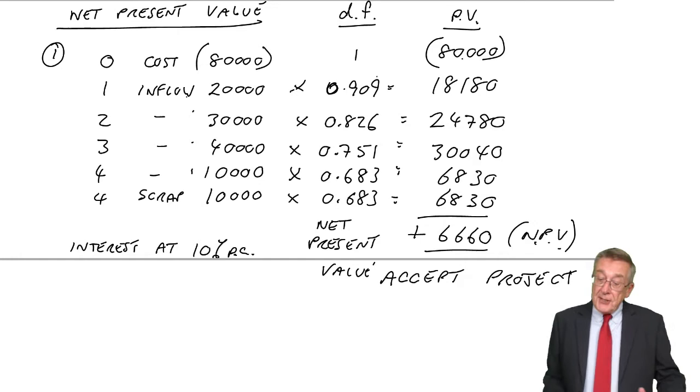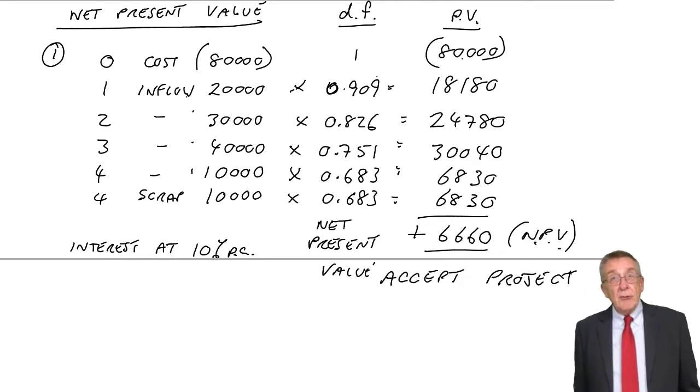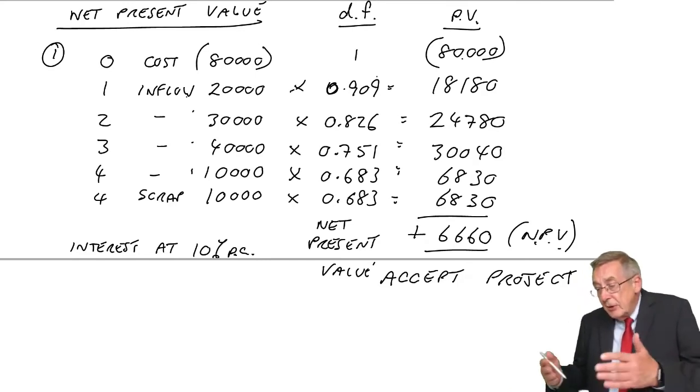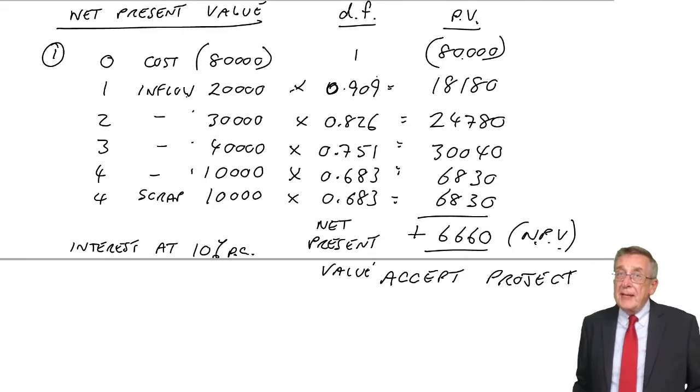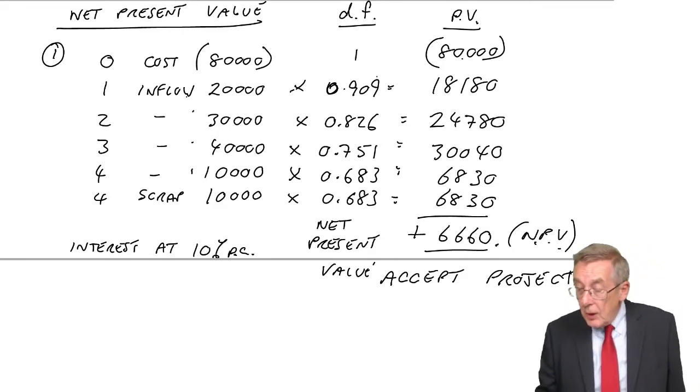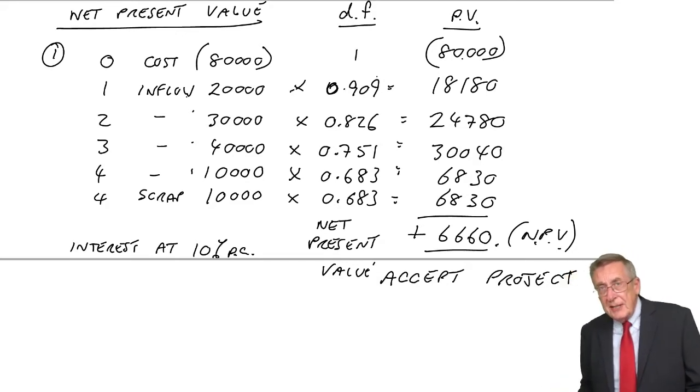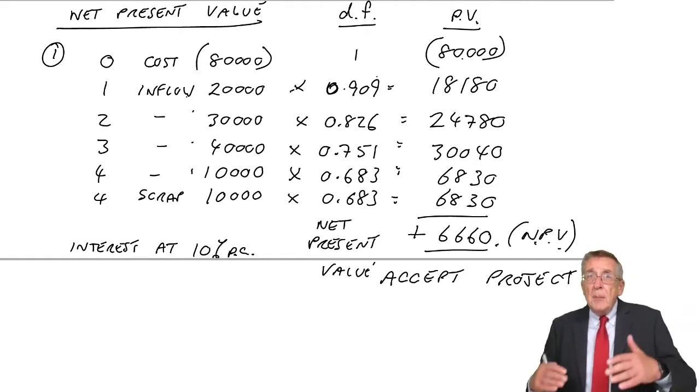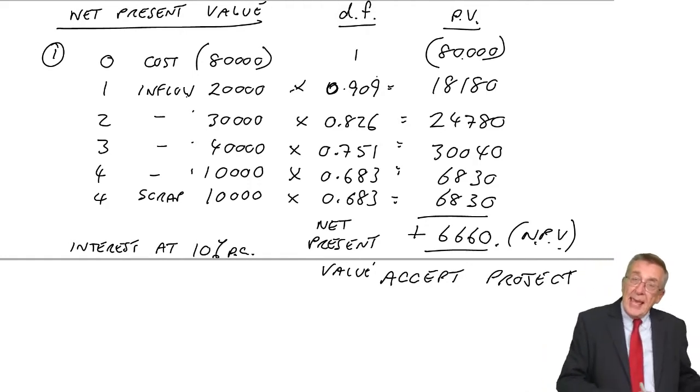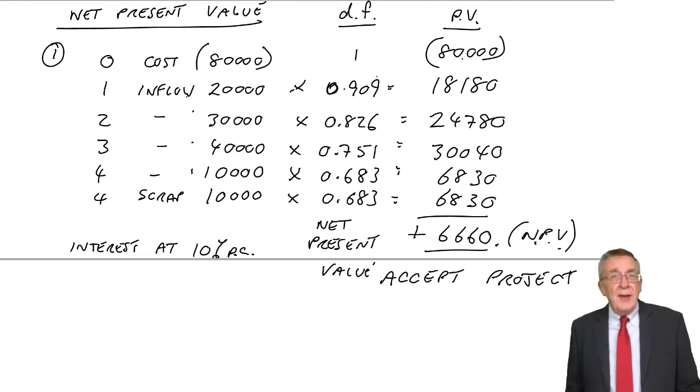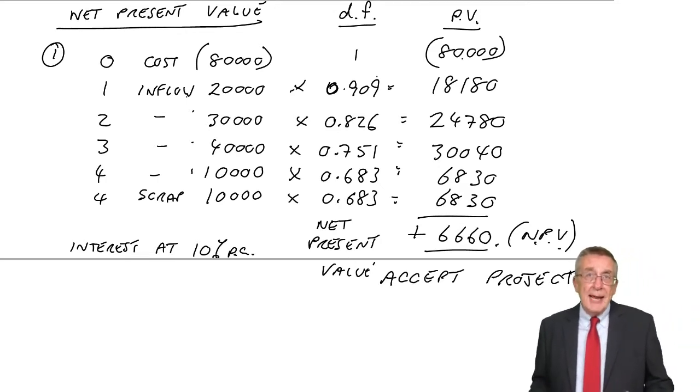But if it turns out we've got the cost of money wrong, and it's really higher than 10%, maybe 11% or 12% or 13% or 14%, the more expensive the rate of interest, the lower the net present value will be. Provided it's still positive, we're still right to have done the machine. But if ever it became negative, then we shouldn't have accepted it. It's very useful to know what we call a break-even.